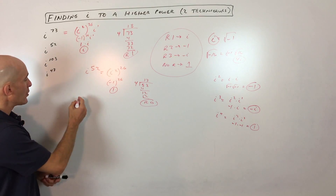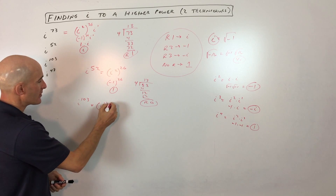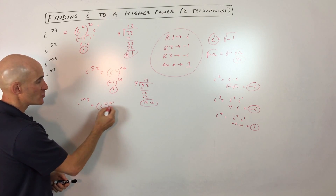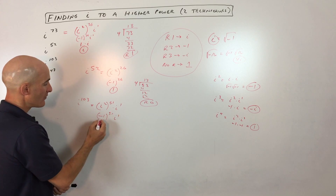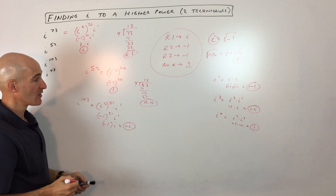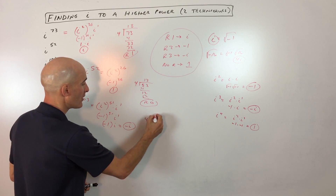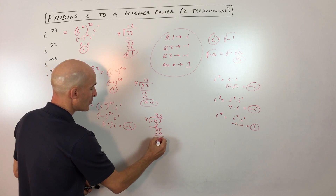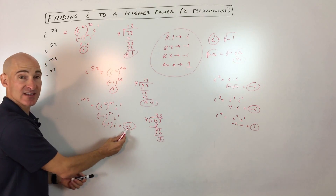Let's look at i to the 103rd power. i to the 103rd is i squared to the 51st power times i to the first — because power to power you multiply, giving 102, with 1 left over. i squared is negative 1; negative 1 to an odd power is negative 1, times i gives us negative i. Using the divide-by-4 technique: 103 divided by 4 gives remainder 3. Remainder 3 means negative i — the same answer.